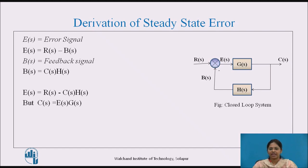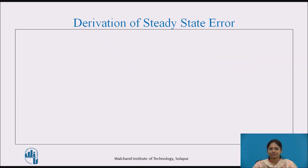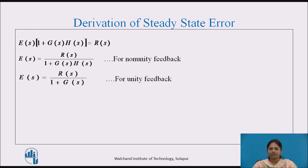Since C(s) = E(s)·G(s), substituting C(s) in equation 2, the error signal becomes E(s) = R(s) − E(s)·G(s)·H(s). Shifting E(s)·G(s)·H(s) to the left side, we get E(s) + E(s)·G(s)·H(s) = R(s), which can be rewritten as E(s)·[1 + G(s)·H(s)] = R(s). For a non-unity feedback system, E(s) = R(s) / [1 + G(s)·H(s)], and for a unity feedback system, E(s) = R(s) / [1 + G(s)].